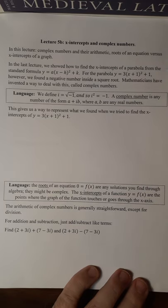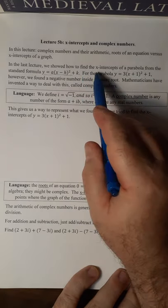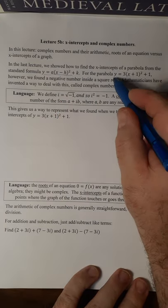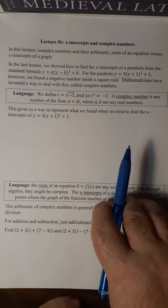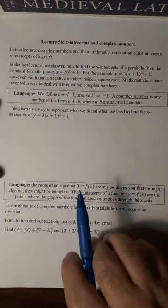So we look for the x-intercepts of a parabola from the standard formula. If you have this to find the x-intercepts, you set y equal to 0 and solve for x. And when we did this for the last parabola, we ended up with a negative number inside of the square root. We have invented a way to deal with this, mathematicians have, and it's called complex numbers.